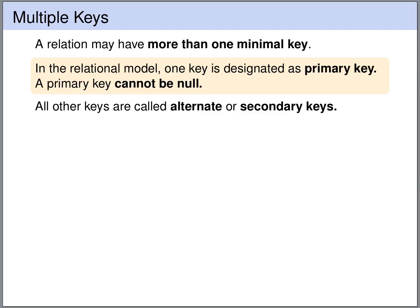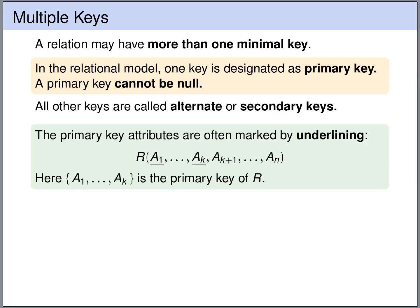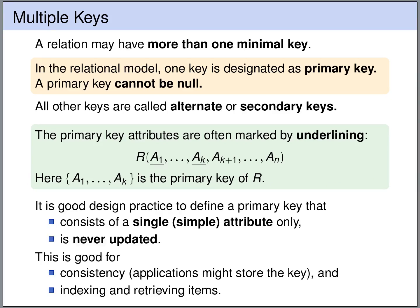A relation can have more than one minimal key. In the relational model, we designate one of the keys as the primary key — a primary key cannot be null. All other keys are called alternative or secondary keys. We indicate the primary key attributes by underlining them in the relation schema. For relation R, the set a1 up to ak is the primary key. It is good design practice to define a primary key that consists of a single simple attribute and is never updated, which helps the DBMS build index structures and efficiently access the data.